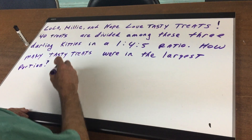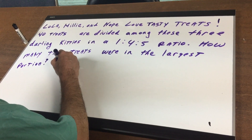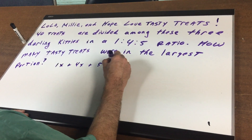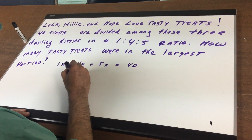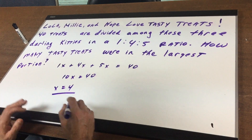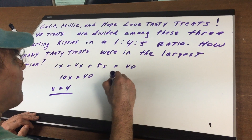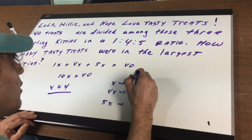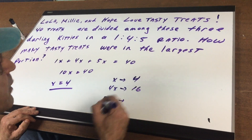What I would do is take the one to four to five ratio and think of this as 1x plus 4x plus 5x, and that's equal to 40. That's going to give me 10x equals 40, or solving for x I come up with 4. So we have 1x, 4x, and 5x — and x would be 4.